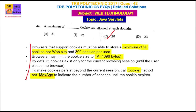A browser that supports cookies must be able to store a minimum of 20 cookies per website. There is a maximum of 20 cookies per website. For a user, there is a minimum of 300 cookies total.